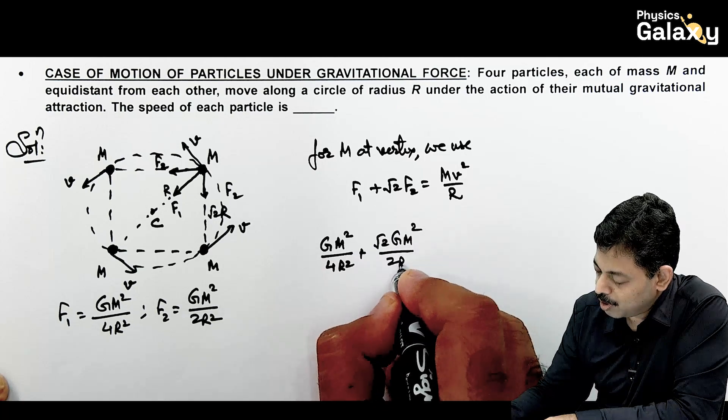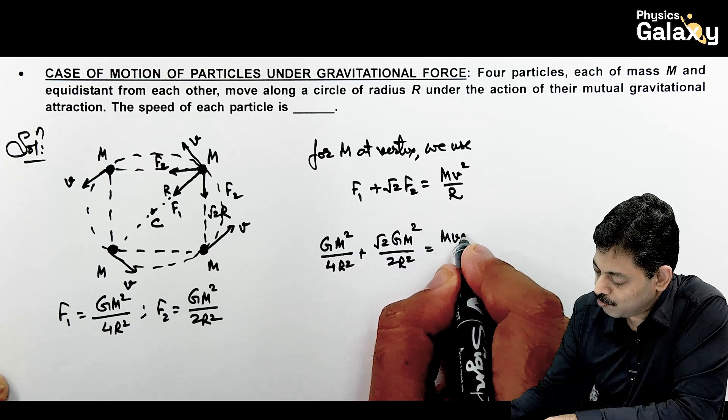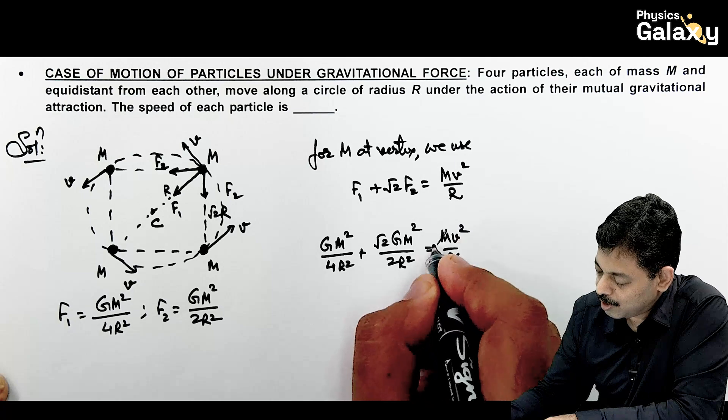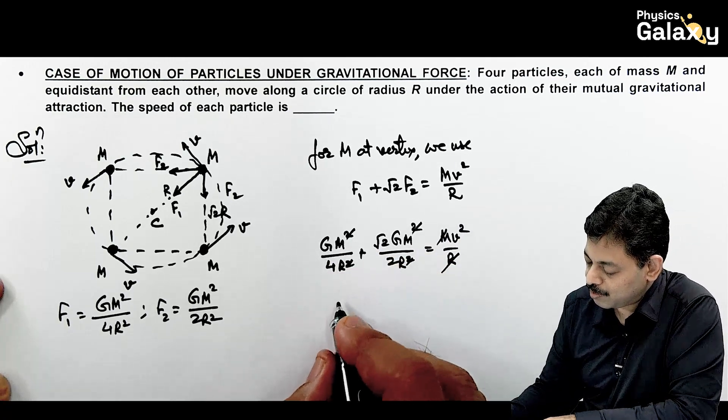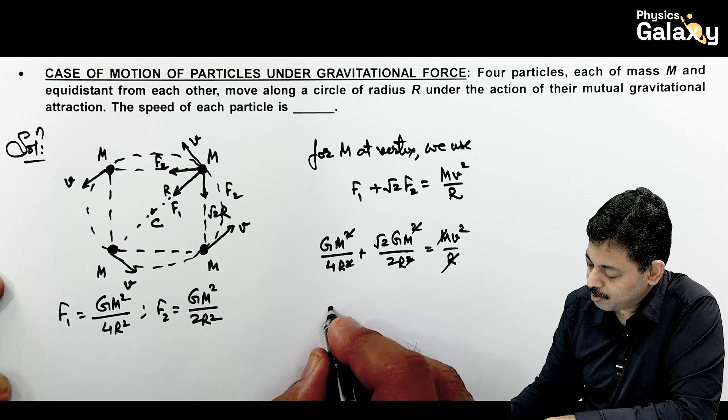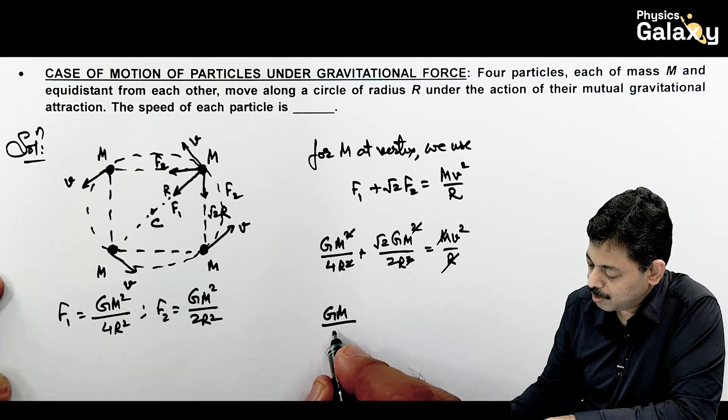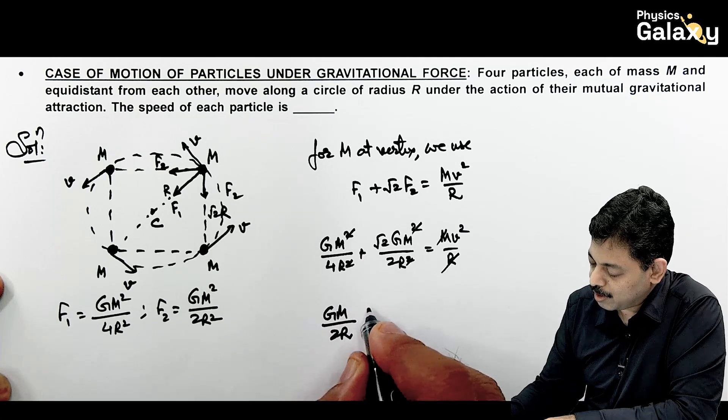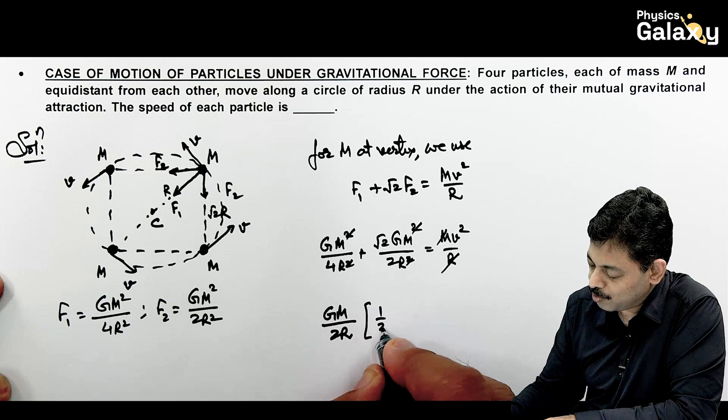If we substitute, this gives Gm squared by 4R squared plus this will be root 2 times Gm squared by 2R squared equals to mv squared by R. So one R and m gets cancelled out. So here we can see this will be Gm squared by 2R will be taken out.